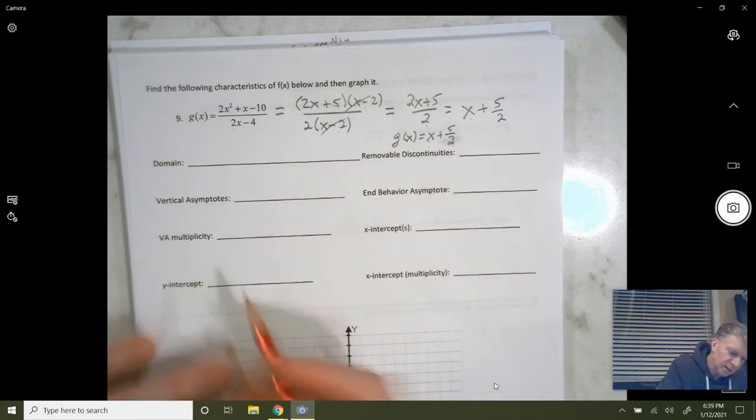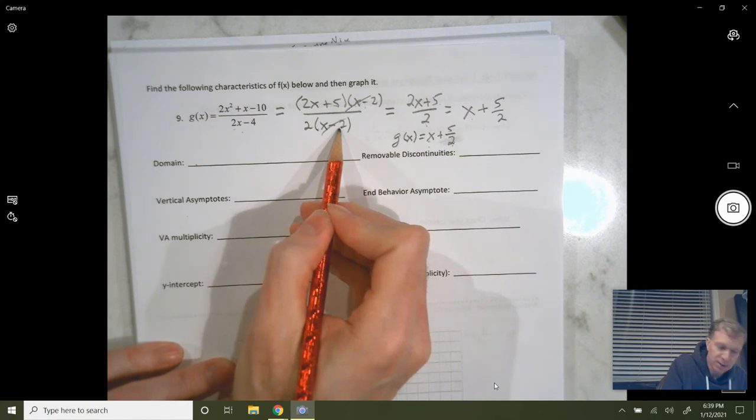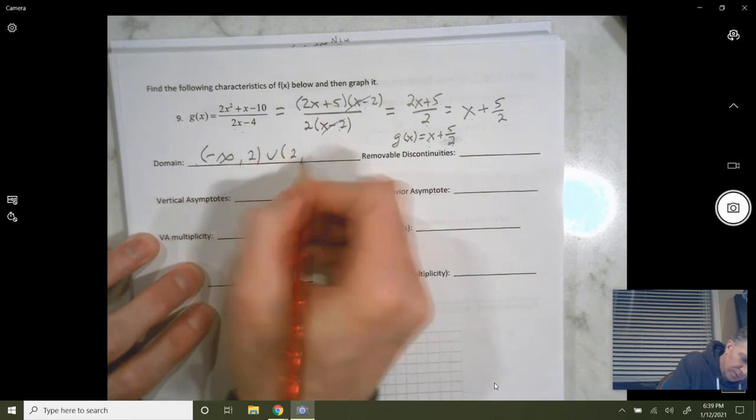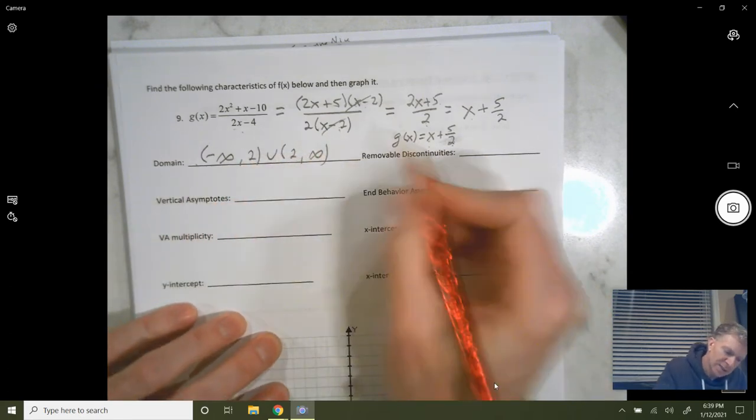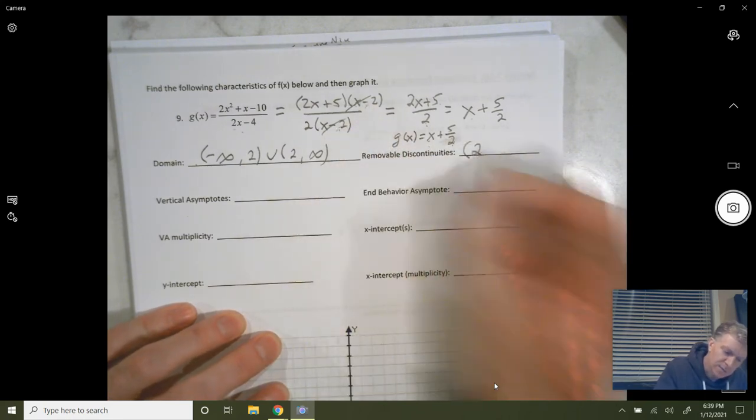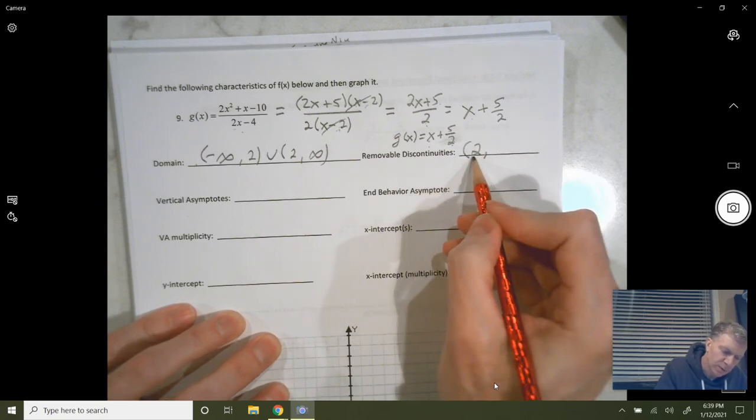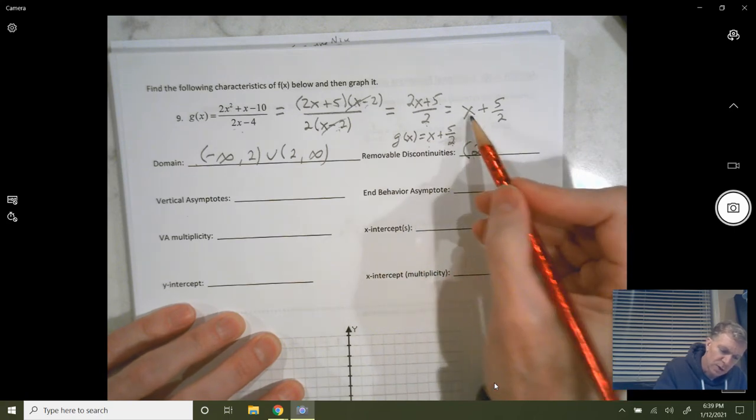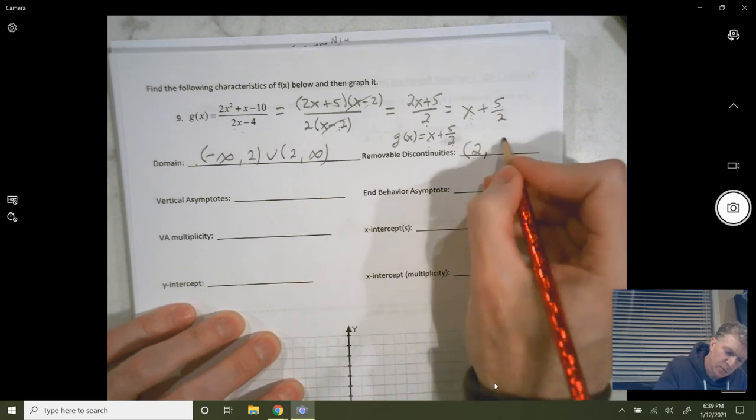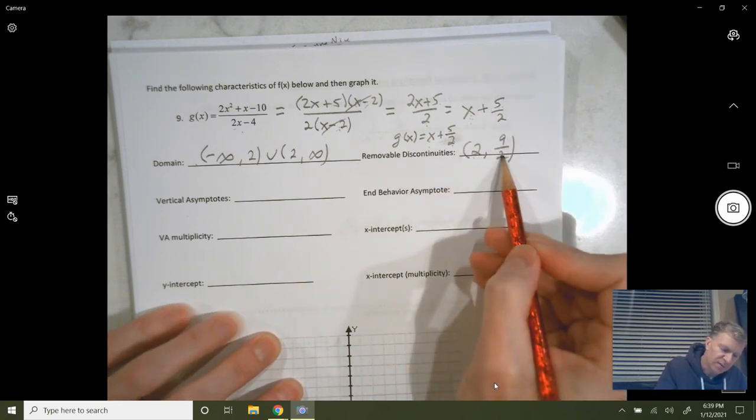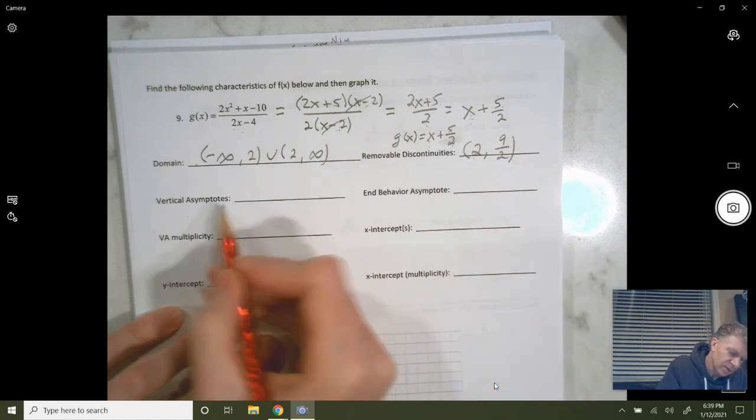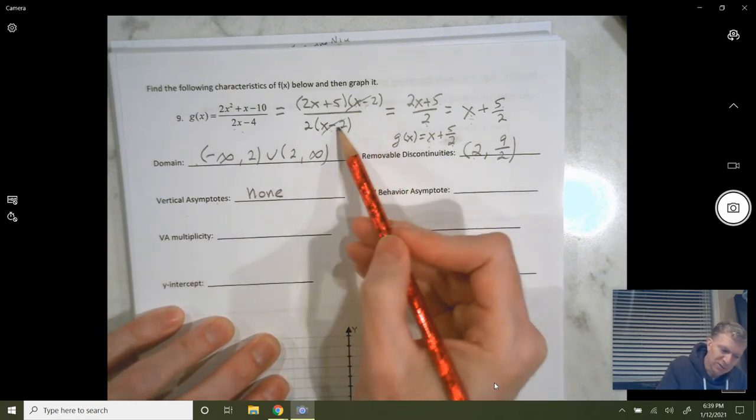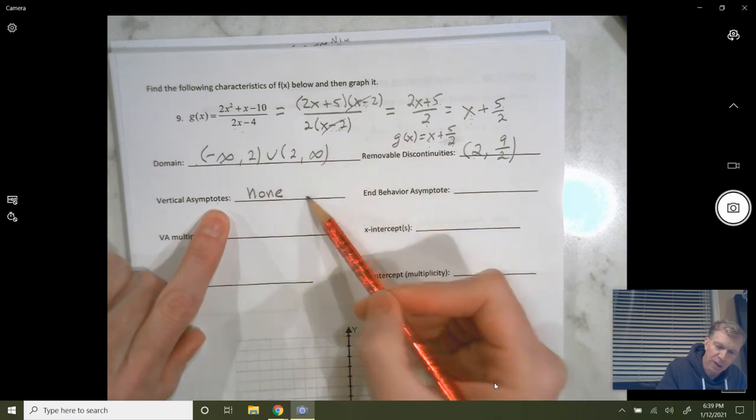So we can figure out everything else. Domain, everything except for a positive 2. There is going to be a discontinuity there. So negative infinity to positive 2 and union with positive 2 to infinity. The removable discontinuity, since the factor of x minus 2 cancels, and x is positive 2, we get a removable discontinuity, and you'll plug 2 into your function, the simplified version of the function. So 2 plus 5 halves, that's going to be 4 halves plus 5 halves, or 9 halves, or a value of 4.5. Vertical asymptote, there's none. Look at when that's your denominator zero, but if it cancels, it's not going to be a vertical asymptote.